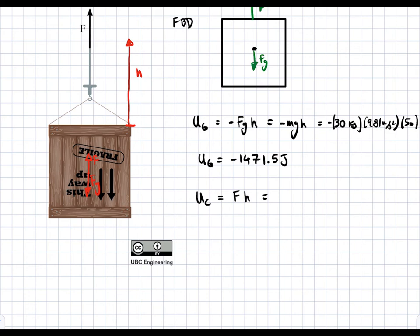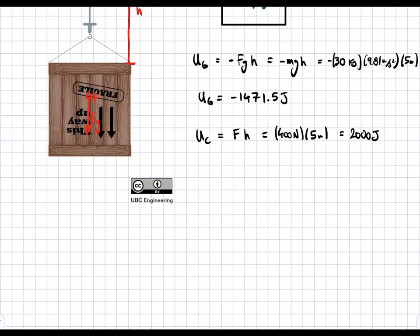And the force is just going to be F times H, which is the distance traveled. If we plug in some numbers, we get 400 Newtons times a height of five meters. This is going to be equal to 2000 joules. So we can write out our answer.